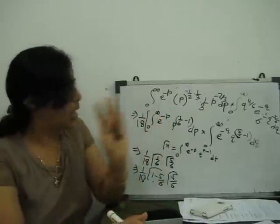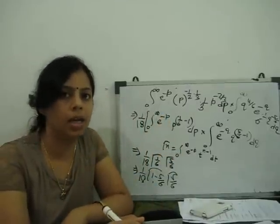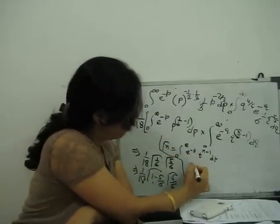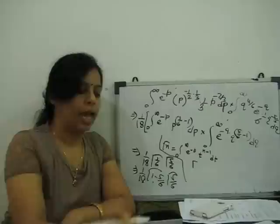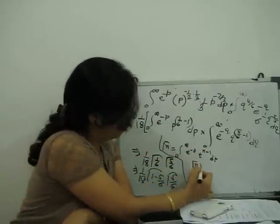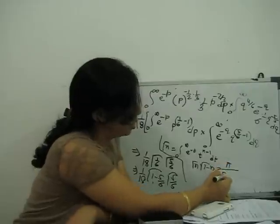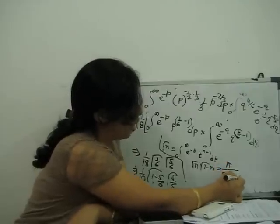So again, the second property of the gamma integral: gamma of n times gamma of 1 minus n equals pi upon sine n pi.